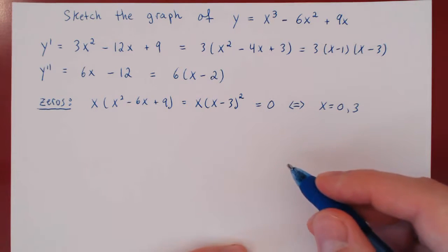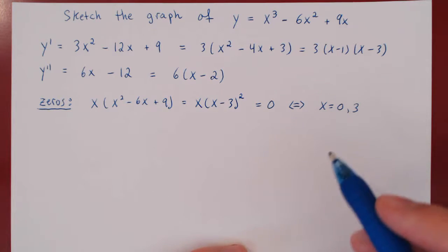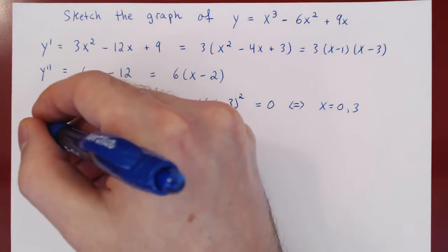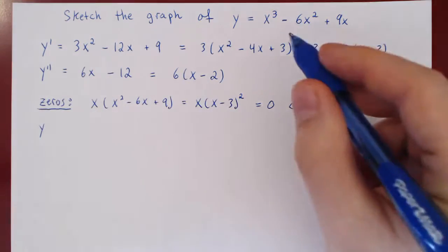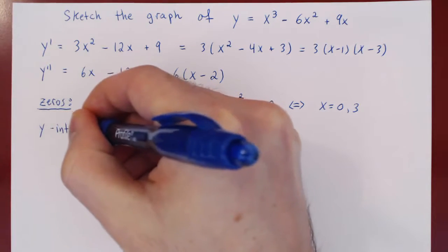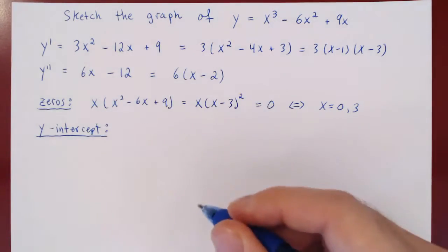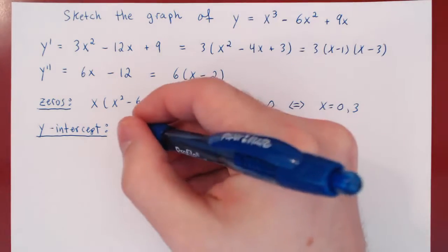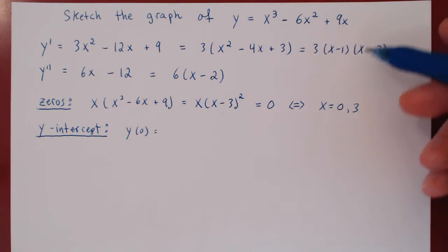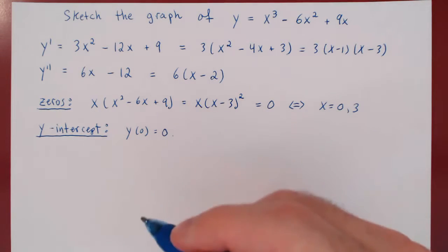We have two zeros of the function. Our cubic polynomial will equal 0 when x equals 0 or x equals 3. For the y-intercept — where the curve intercepts the y-axis — this is simply the y-value when x is 0. If you plug in 0, you get 0. So the y-intercept is 0.